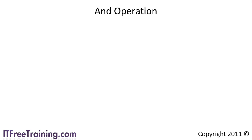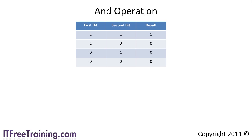Once you start working with more than one network it is important to understand how the AND operator works. When comparing two bits, if both bits are 1 the result is a 1. In all other cases the result is 0 — all it takes is one or both bits to be 0 and the result is 0. If you have trouble understanding this, think of the AND operator as a multiplication operator: 1 times 1 is 1, 1 times 0 is 0, 0 times 1 is 0, and 0 times 0 is 0.